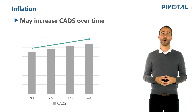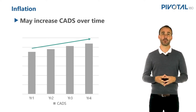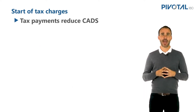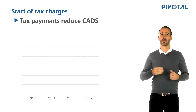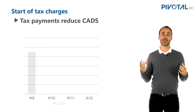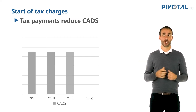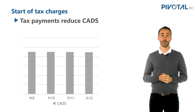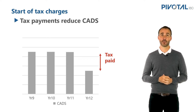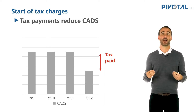In the case of a taxable entity, our tax charges might start coming in — say in year 12 — after our losses have expired, and suddenly our CADs drops down because we now have to pay tax. Or finally, maybe our price or volume increases or reduces over time.